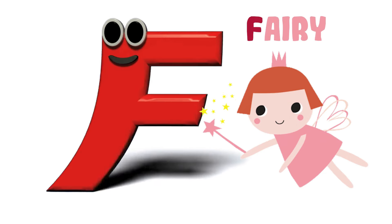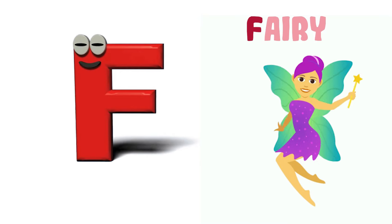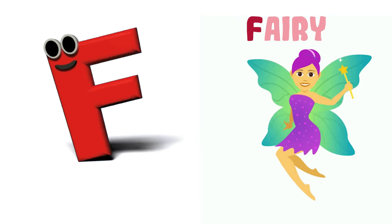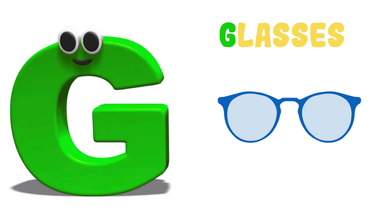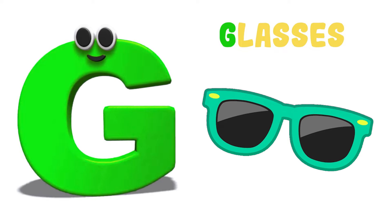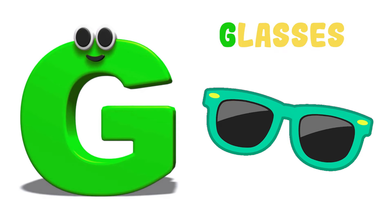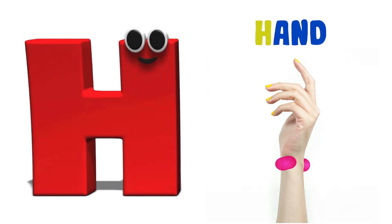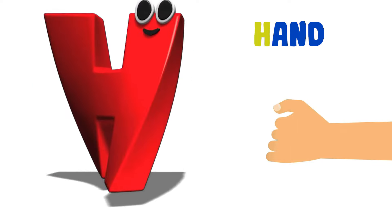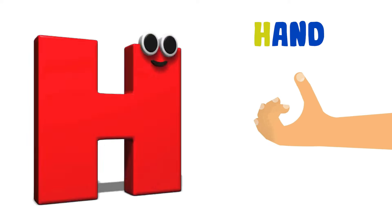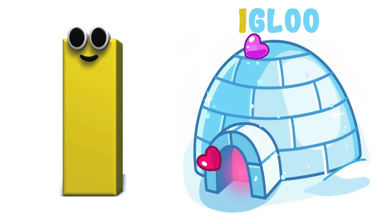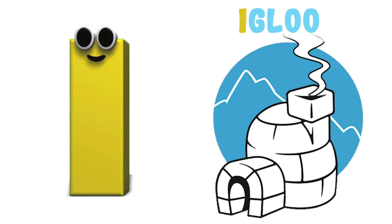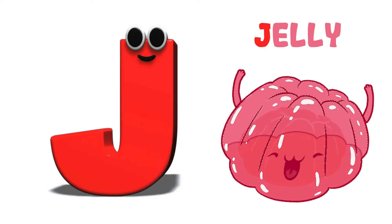F is for Fairy. F-F-Fairy, F-F-Fairy, F-Fairy. G is for Glasses. G-Glasses, G-Glasses, G-Glasses. H is for Han. H-H-Han, H-Han. I is for Igloo. I-I-Igloo, I-Igloo.